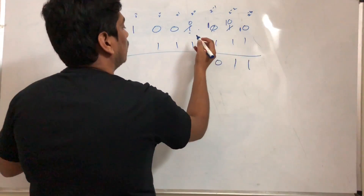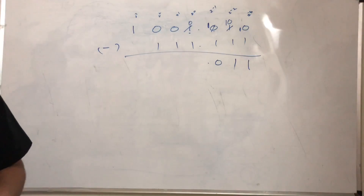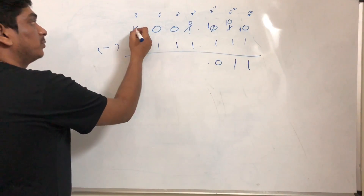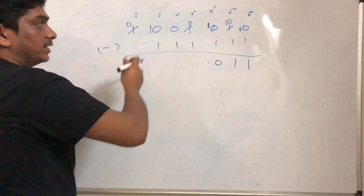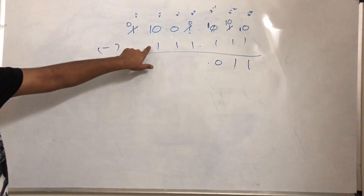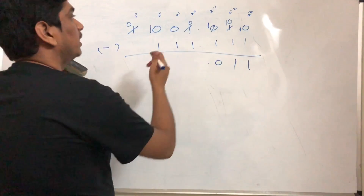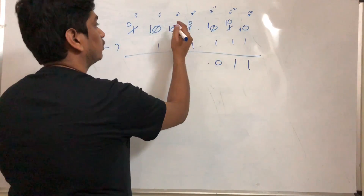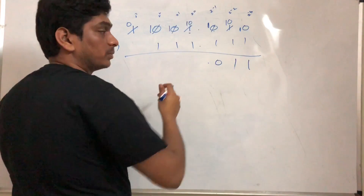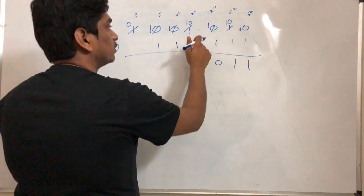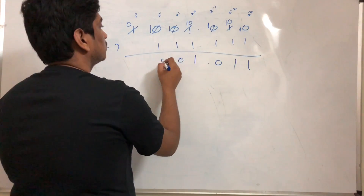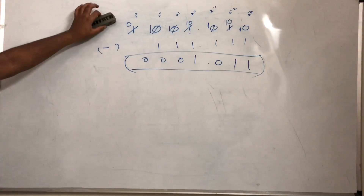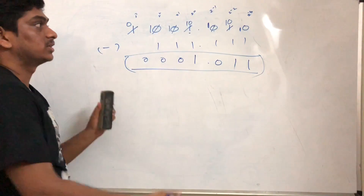Then 0 minus 1 — not possible. The next place has a value, so I remove that 1, make it 0, and carry it forward. I'm not going to use it right here, so it remains as 1 and becomes 1 0 in the target place — but there's still a subtraction to do. 1 0 minus 1 is 1, 1 minus 1 is 0. So the result of the subtraction is 0 0 1 0.